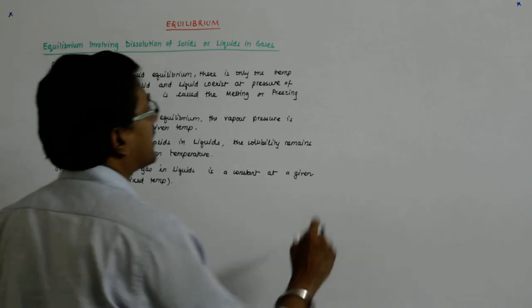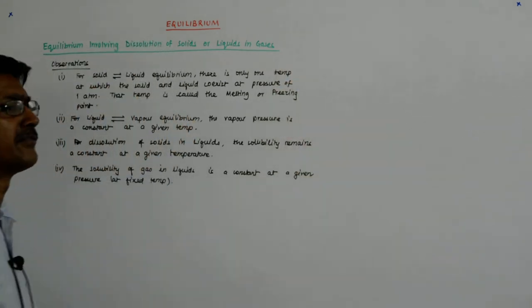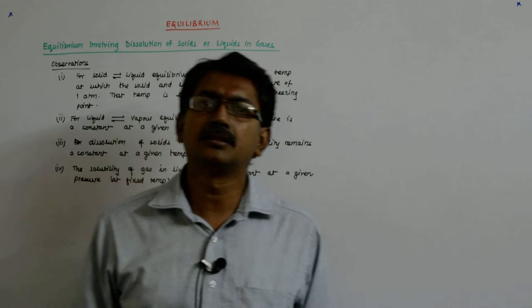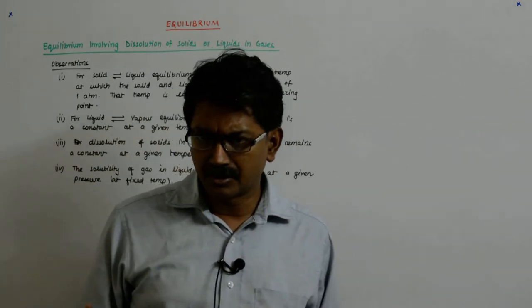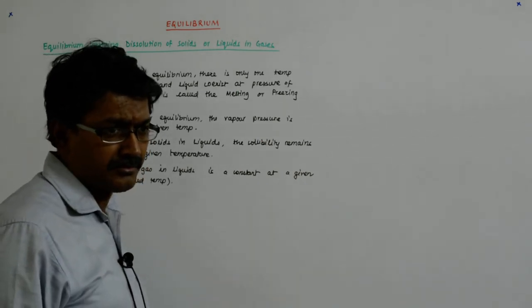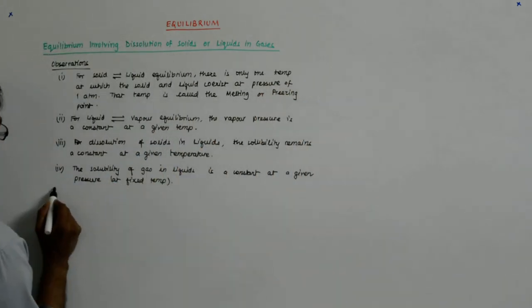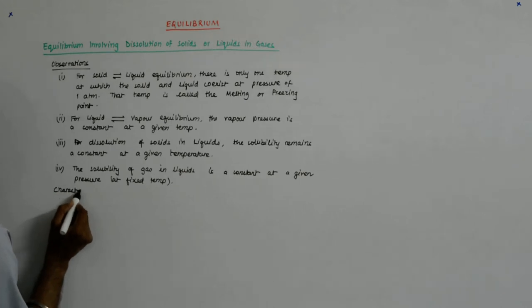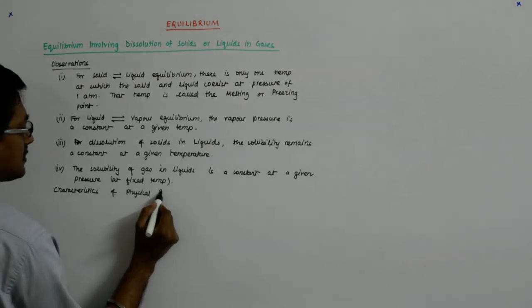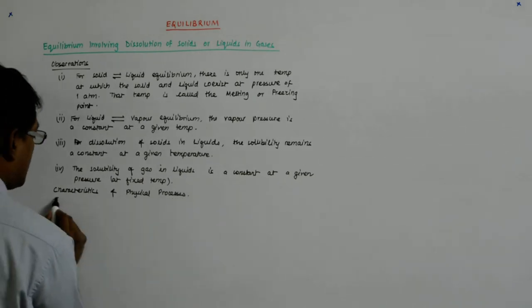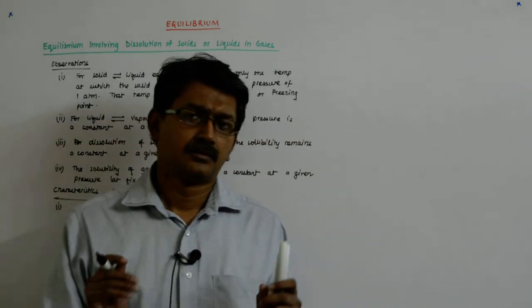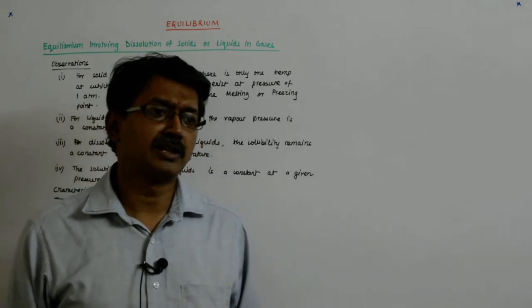Now, some characteristics of physical processes under equilibrium. The first process we saw was the conversion of one form into another; the other was solubility — both are physical processes where no new compound is formed. The first characteristic is that equilibrium is possible only in a closed system.